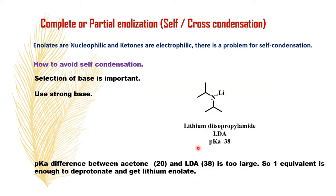The second issue is complete or partial enolization — which reflects whether we get cross-condensation or self-condensation. As we know, ketones have two tautomers: the ketone tautomer is electrophilic, whereas the enolate tautomer is nucleophilic. During the aldol reaction, the problem is partial enolation of the ketones, which may give self-condensation. A ketone undergoes keto-enol tautomerism, and if less percentage of enol formation takes place, the reaction gives less yield of aldol product.